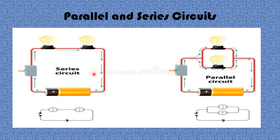One major difference between series and parallel circuits is that in a series circuit there is only one path for electrons to flow, while in a parallel circuit there are two paths. Another difference is that if the circuit is broken or interrupted in a series circuit, both bulbs will go off because there is only one single path for electrons to flow.